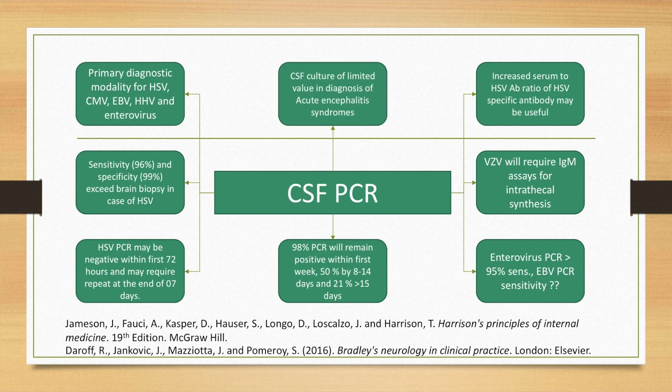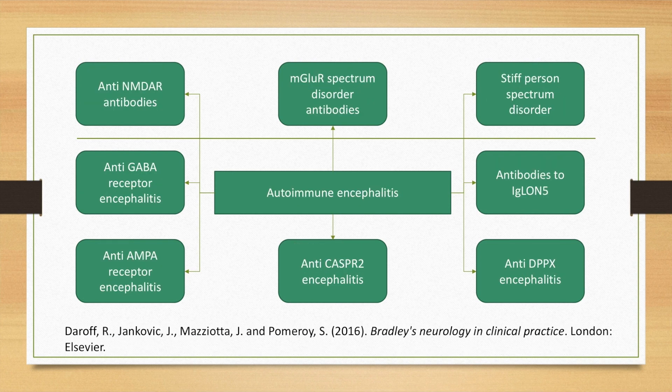In autoimmune encephalitis, CSF culture is of limited value in diagnosis. The antibodies may be anti-NMDAR, anti-GABA, anti-AMPA, anti-CASPR2, anti-DPPX, antibodies to IgLON5, stiff person spectrum disorder, and MGLUР spectrum disorder.